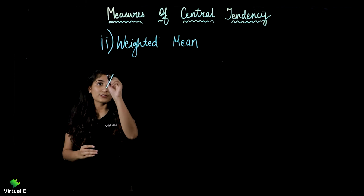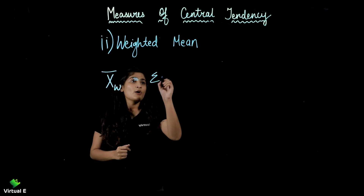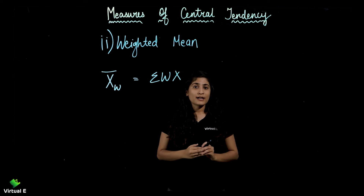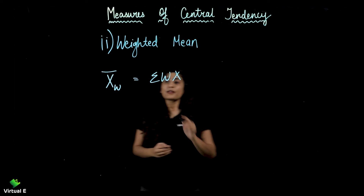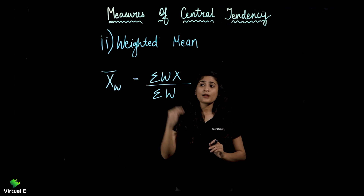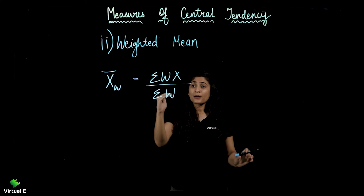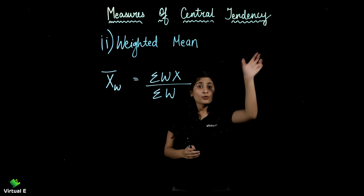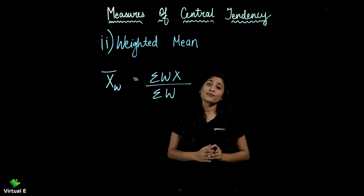Now the formula for weighted mean goes like: X-bar-W, that means weighted mean, equals Sigma of WX divided by Sigma of W. You will be given weights for all variables and the values of X. You calculate WX, then take its sigma — just as we did before. In the denominator comes Sigma of W, that is the sigma of all the weights given. Previously we would write N below; here instead of number of observations, you add all the weights — for example 5, 6, 10, 12 — and that total weight goes in the denominator.